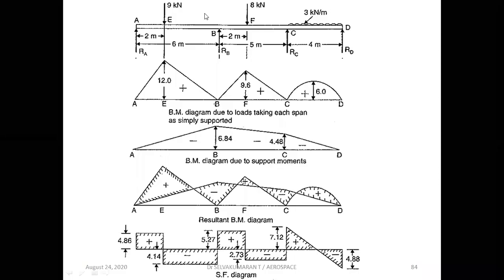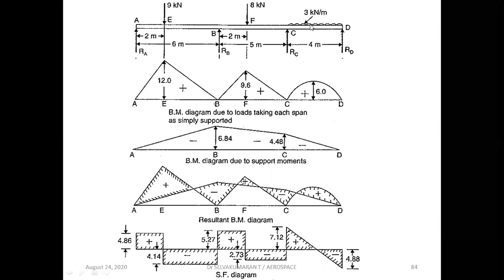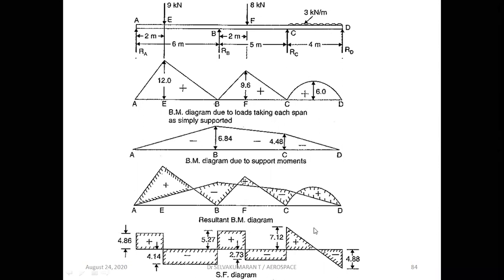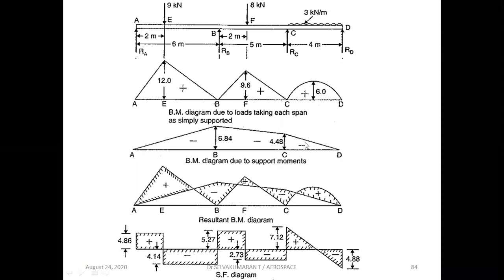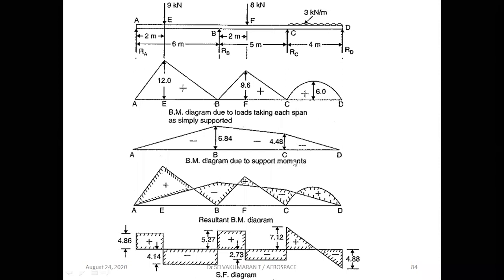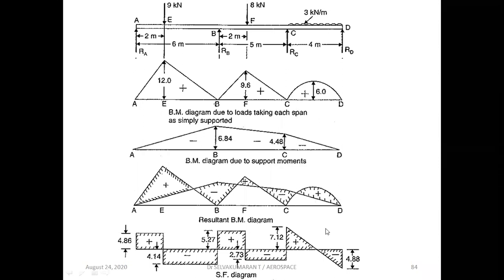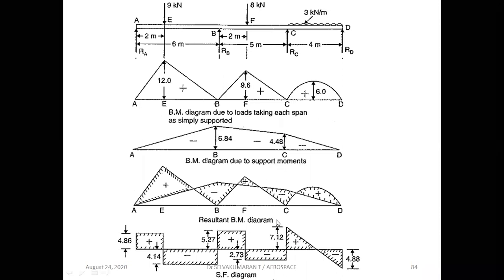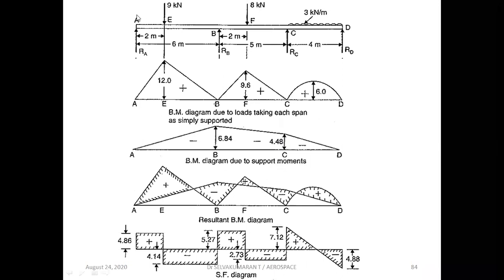Today we will solve this problem. A continuous beam — a beam having more than two supports — is called a continuous beam. You can see supports at A, B, C, D — four supports. It is subjected to point loads as well as UDL. We will obtain the bending moment diagram due to vertical loads (mu diagram), the bending moment diagram due to support moments (mu-dash diagram), and the shear force diagram, all step by step using Clapeyron's theorem of three-moment equation.